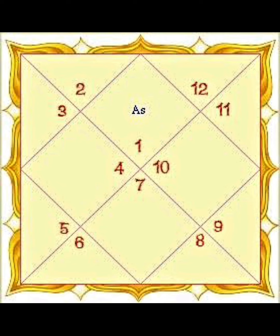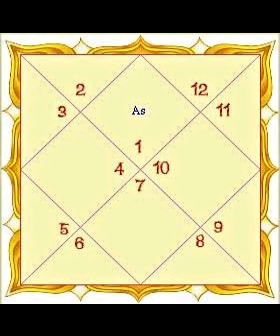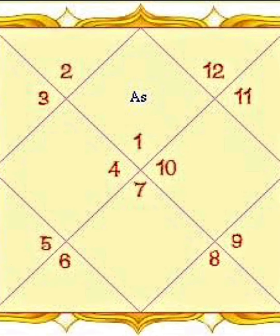To summarize the directional groupings: 1, 5, 9 are the fire signs — direction is East. 3, 7, 11 are the air signs — direction is West. 4, 8, 12 are the water signs — direction is North. And 2, 6, 10 — Taurus, Virgo, and Capricorn — are the earth signs, and their direction is South. Planets in any of these grouped signs are considered in a trinal relation or conjunction because they share the same direction.